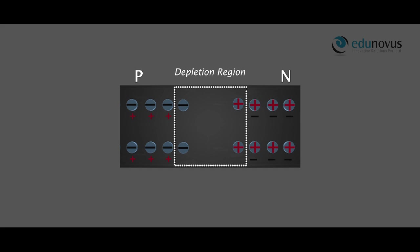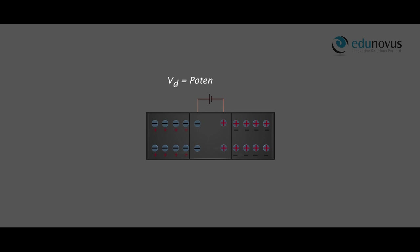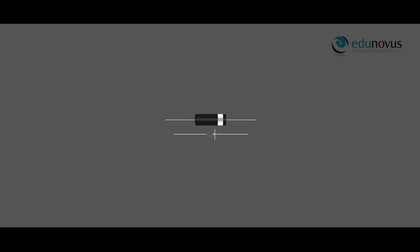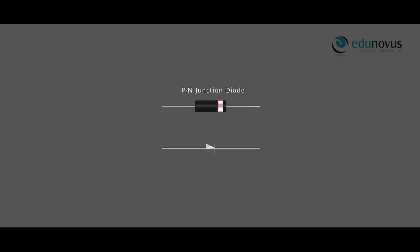Since stationary positive and negative charges exist on either side of the junction region, there is an electric potential difference Vd across the junction, which is called the potential barrier. It prevents the further movement of holes and electrons. This combination is the PN junction diode, where the white line on one end indicates the negative terminal.